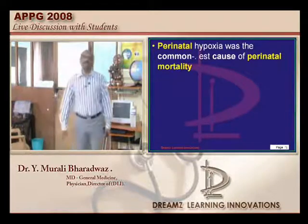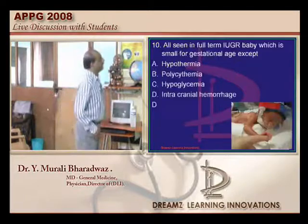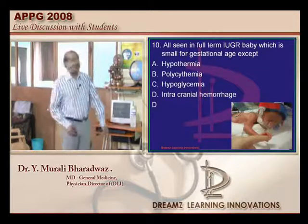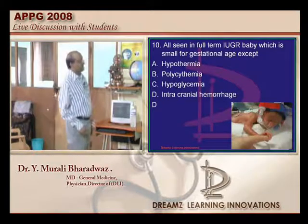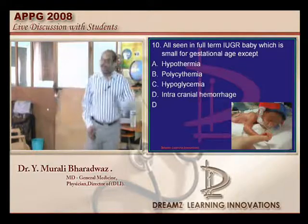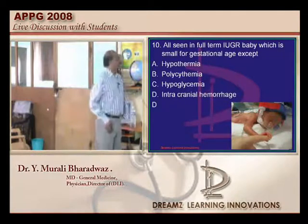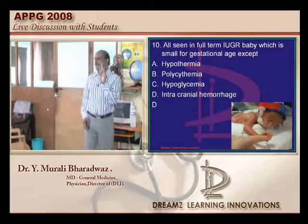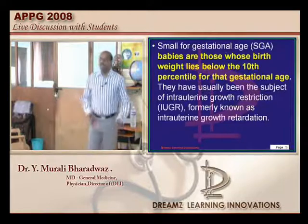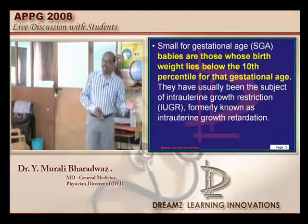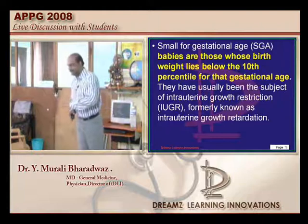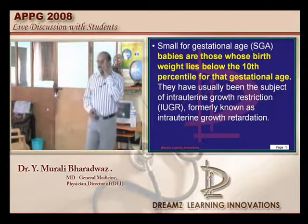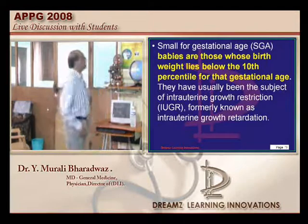A full-term IUGR baby who is small for gestational age - what features will they have? There are two types of IUGR - intrauterine growth retardation. Those who are small for gestational age and those who are normal for gestational age, and those who are preterm and term. We need to know the complications in each group.